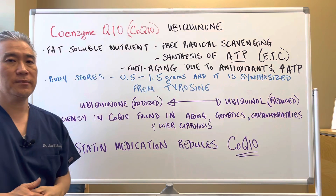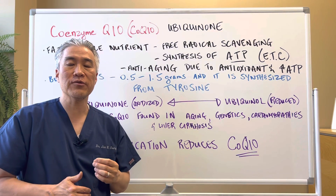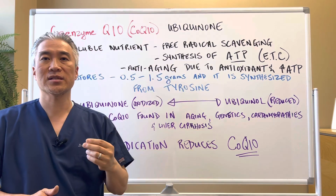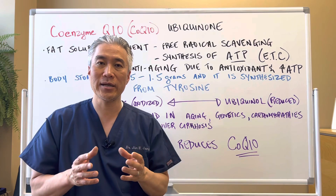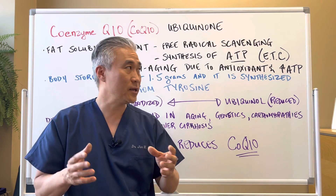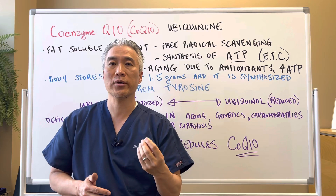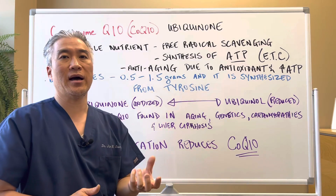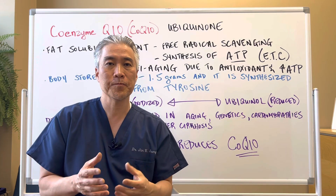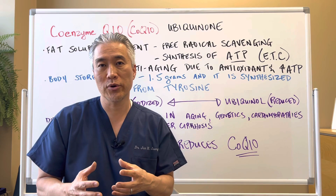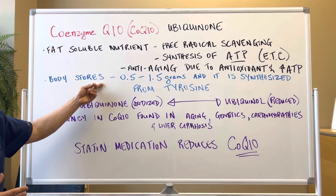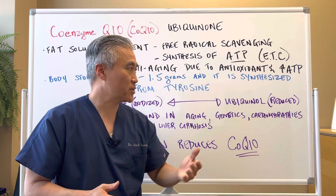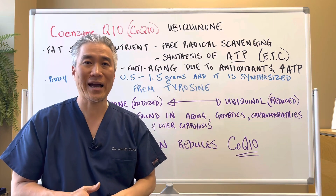CoQ10 is a fat-soluble nutrient. It's very helpful for free radical scavenging — basically it's an antioxidant. It's also helpful in the synthesis of ATP, which is the energy of the mitochondria and the cell in our body. It's part of the electron transport chain. It's also very important for anti-aging due to its antioxidant effect and the production of energy. You need to have energy to be more youthful. The body stores about 0.5 to 1.5 grams of CoQ10 in our system, and it's synthesized in our body from tyrosine.